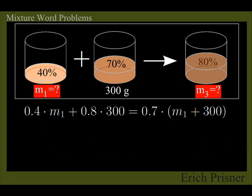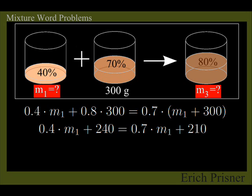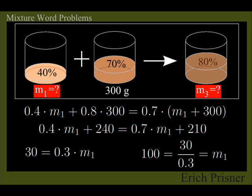We multiply and distribute and get 0.4 times M1 plus 240 equals 0.7 times M1 plus 210. Then we collect like terms and get 30 equals 0.3 times M1, which has a solution of M1 equals 100.